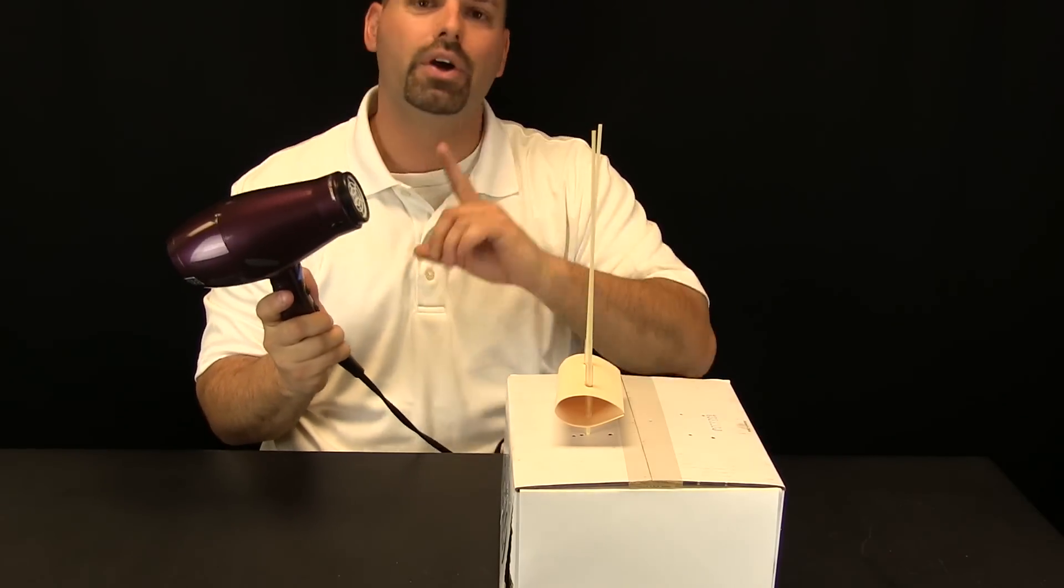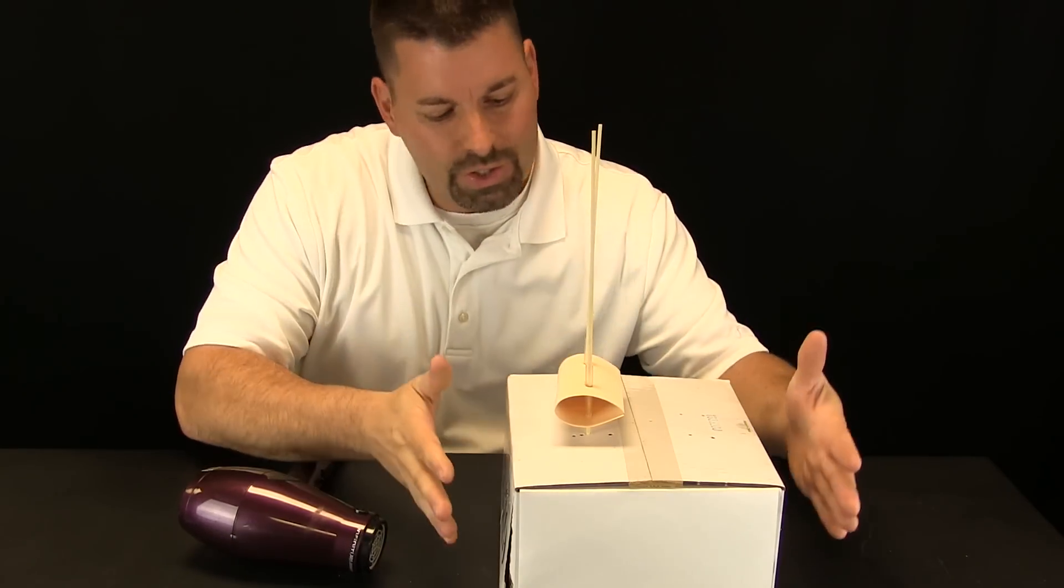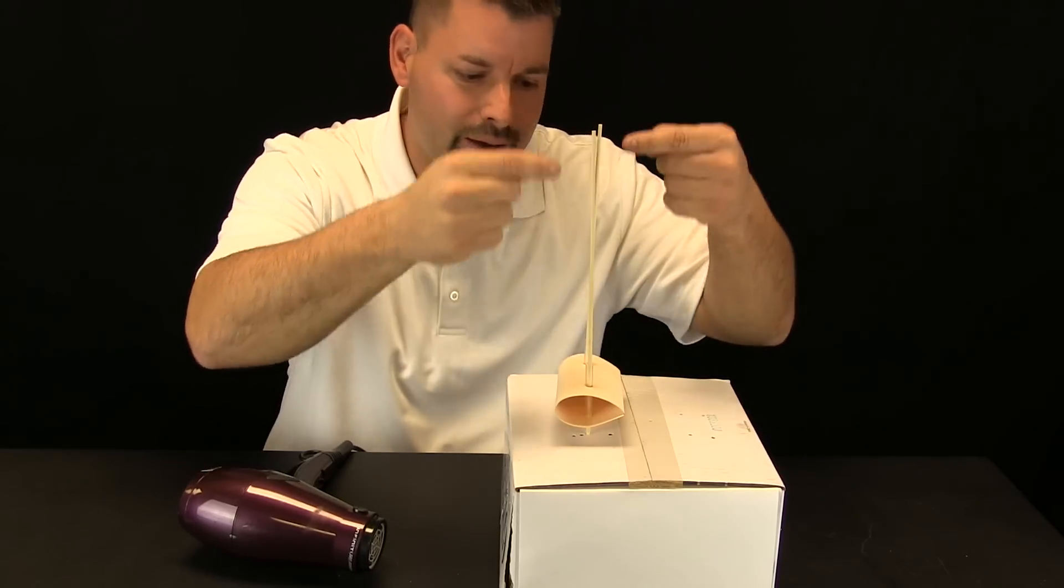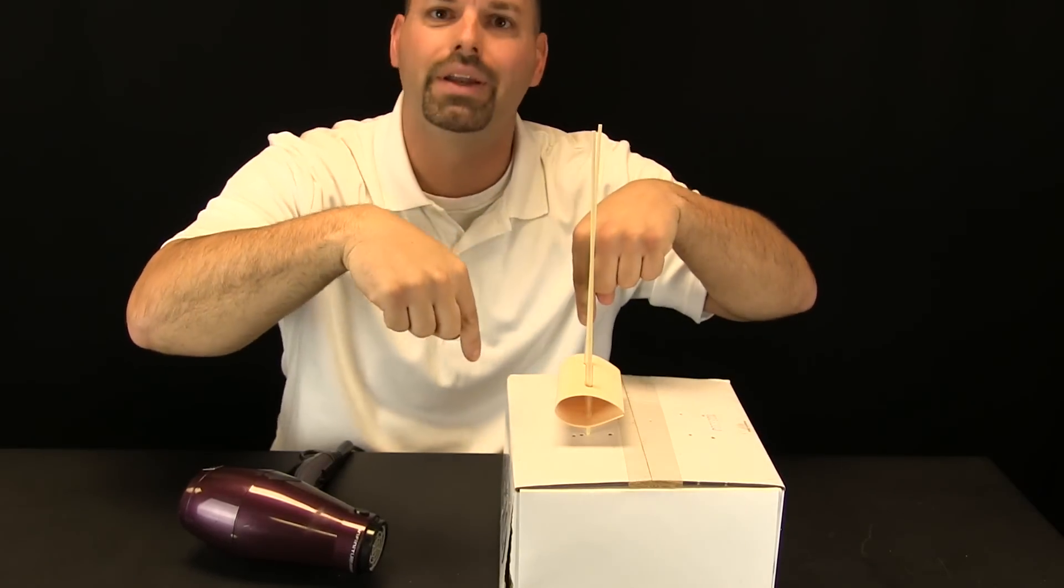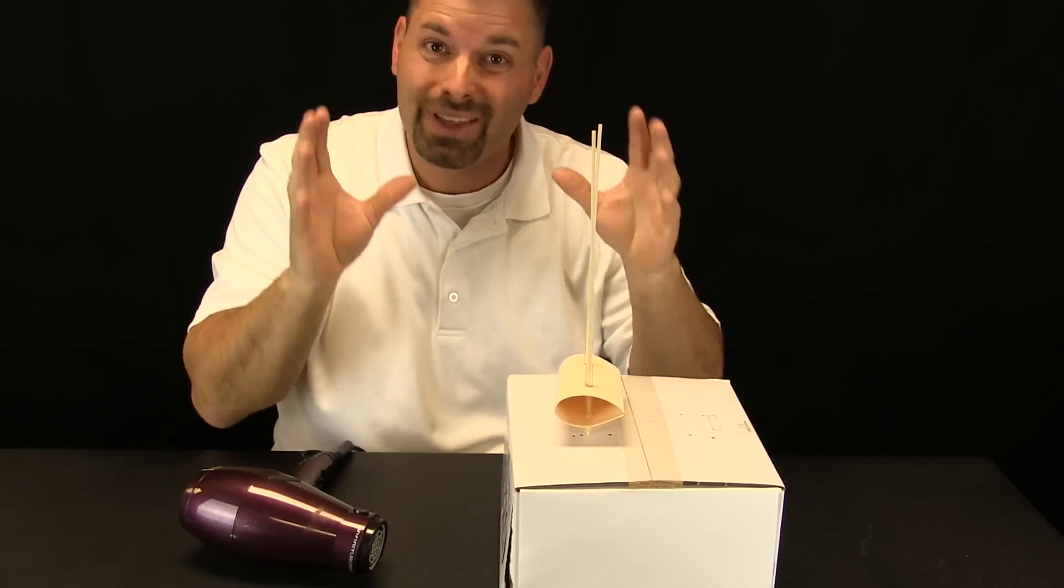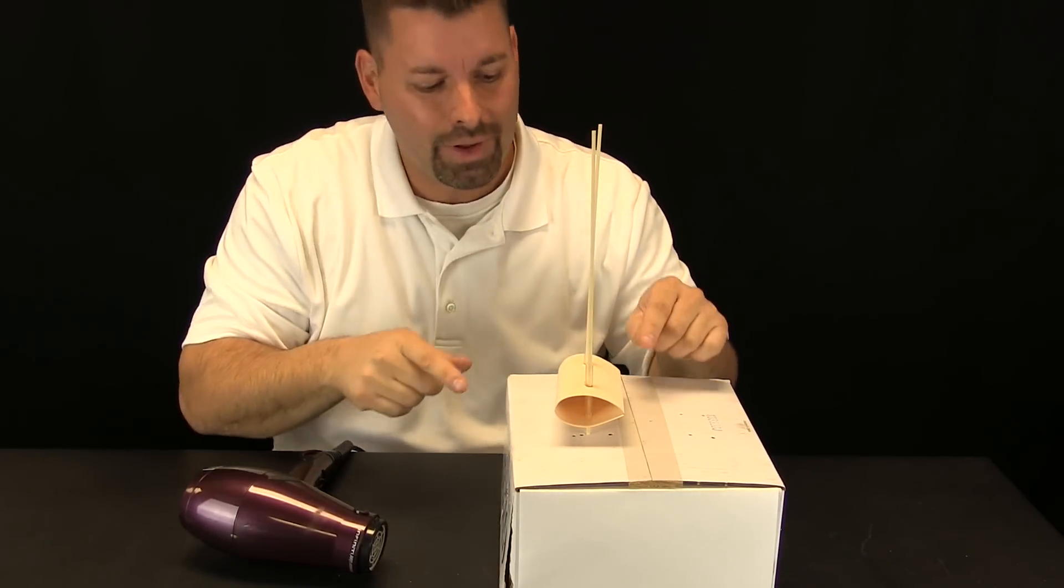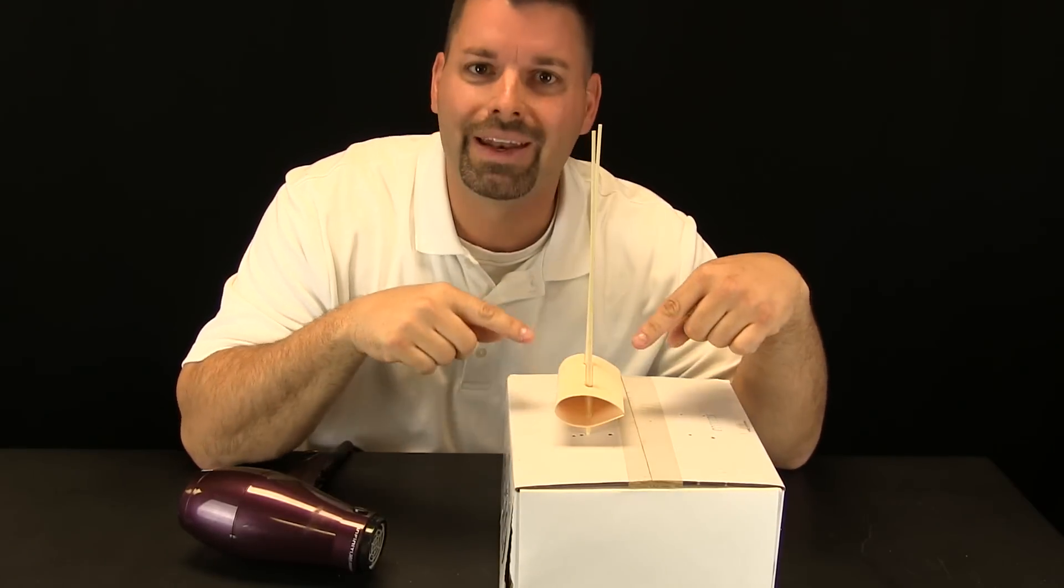So let us explain what we have here. We have a hair dryer that is going to be our quickly moving air. I have a simple cardboard box and I took two bamboo skewers to poke it into the box and now I took that same piece of paper and I cut it down and I shaped it to be an airplane wing.